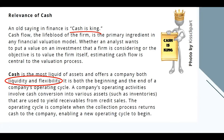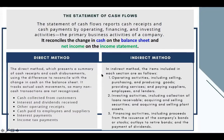Cash is considered both the beginning and the end of a company's operating cycle. The normal operating cycle begins from the time the company disburses cash to pay raw materials to its suppliers. Then raw materials are converted into finished goods, these finished goods are sold, and the company collects cash from its customers. So cash is both the beginning and the end. The operating cycle is complete when the collection process returns cash to the company, enabling a new operating cycle to begin.